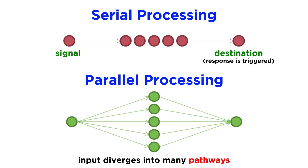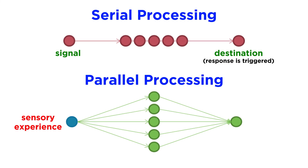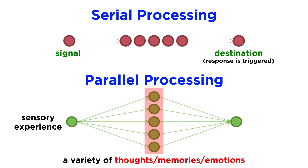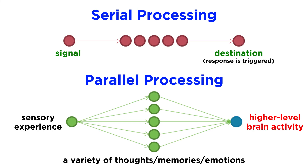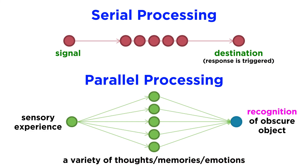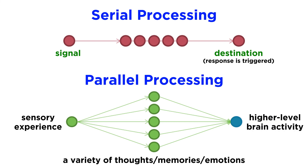Parallel processing, on the other hand, occurs when an input diverges into many pathways, and the destination of each pathway will receive and interpret the information in its own way. This is how smelling something, or hearing a particular song, can trigger a variety of thoughts, memories, and emotions. In this way, parallel processing is behind most higher level brain activity in humans, as we are capable of synthesizing all kinds of information to recognize obscure objects, think abstractly, make plans, and do all the other incredible things that humans can do.